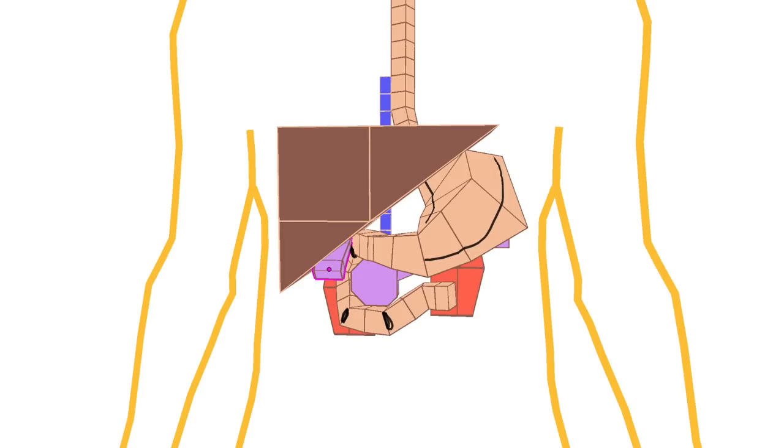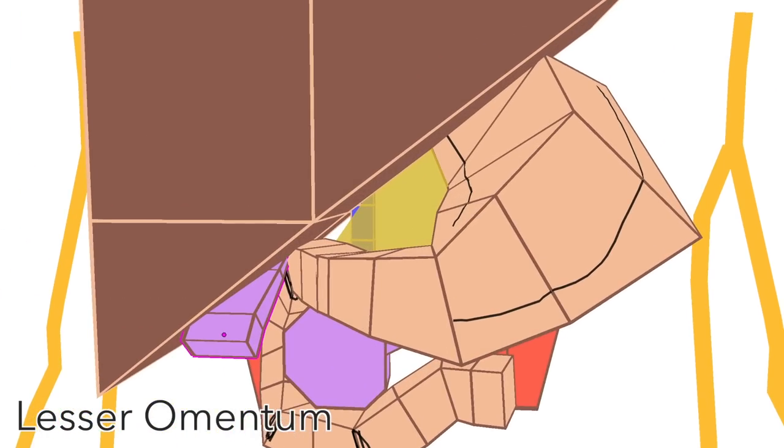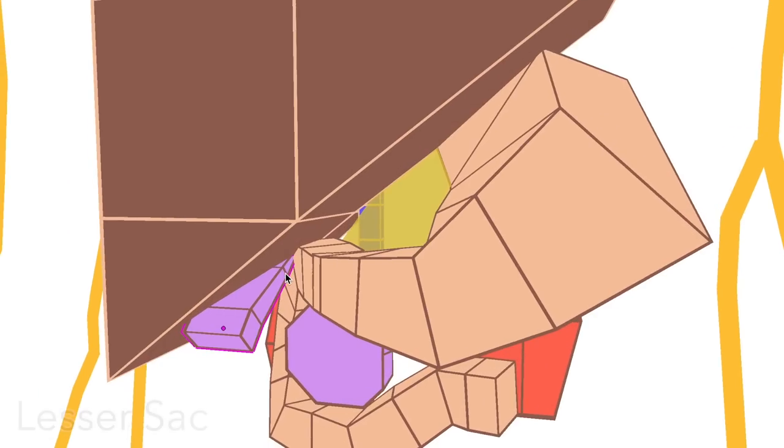So there's a small sheet of peritoneum hanging between the liver and the stomach, which is called the lesser omentum. Behind the lesser omentum is that small space from before, which we call the lesser sac.